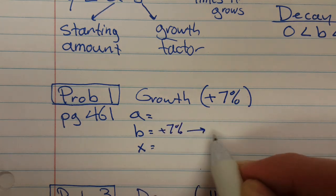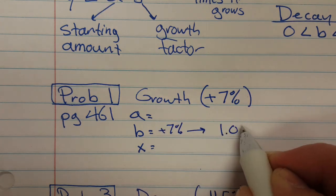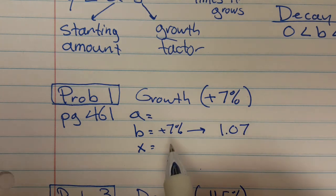So your growth factor is going to be plus seven percent. So what do you actually use? You're going to use 1.07. If you want to grow by seven percent, then you want to take it times 1.07. It's bigger than one, so it's going to grow.